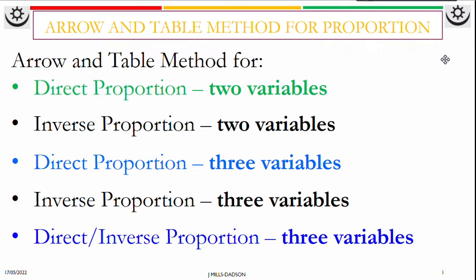So we're going through direct proportion with two variables, inverse proportion two variables, direct proportion with three variables, inverse proportion three variables, and the last one is a combination of direct and inverse proportion with three variables.